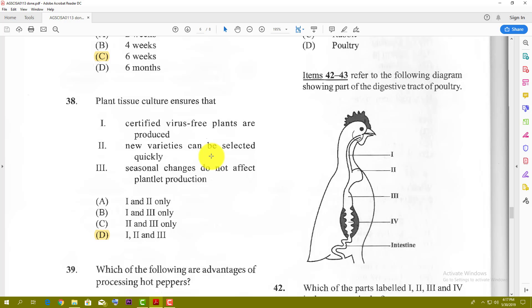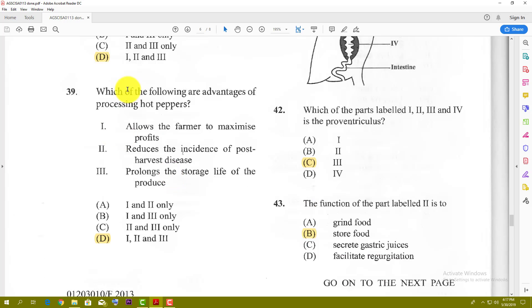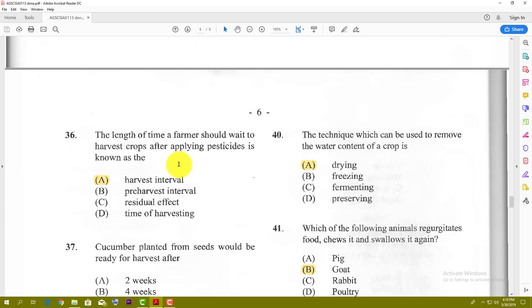Number thirty-nine: which of the following are advantages of processing hot peppers? One, allows farmers to maximize profit. Two, reduces the incidence of post-harvest disease. Three, prolongs the storage life of produce. The best answer is all of the above, D. When you process fruits and vegetables, you can maximize profits because you're not only looking at fresh revenue stream but also from processed products. You reduce the incidence of disease because you prevent them from staying too long and getting spoiled and damaged. You also prolong the storage life of the product because some of them tend to have preservatives. Number forty: the technique which can be used to remove water content of crops is drying. This one is pretty obvious.